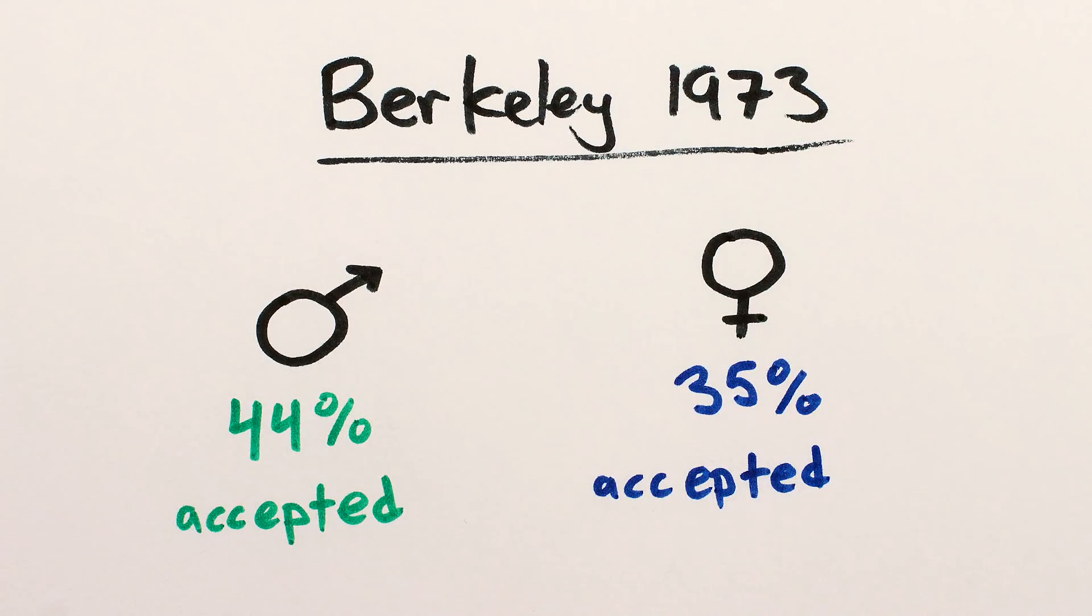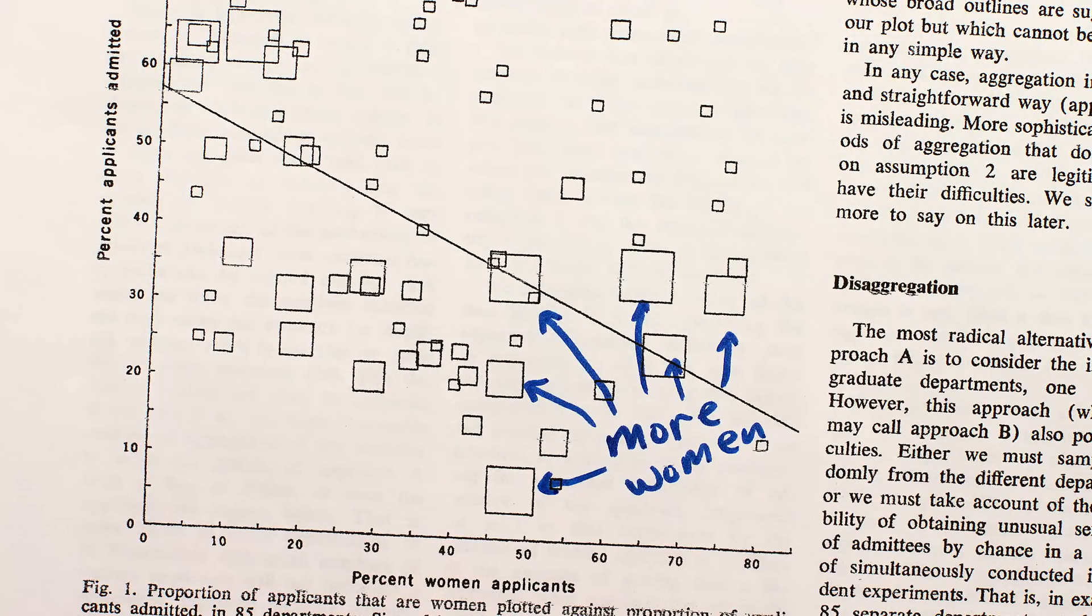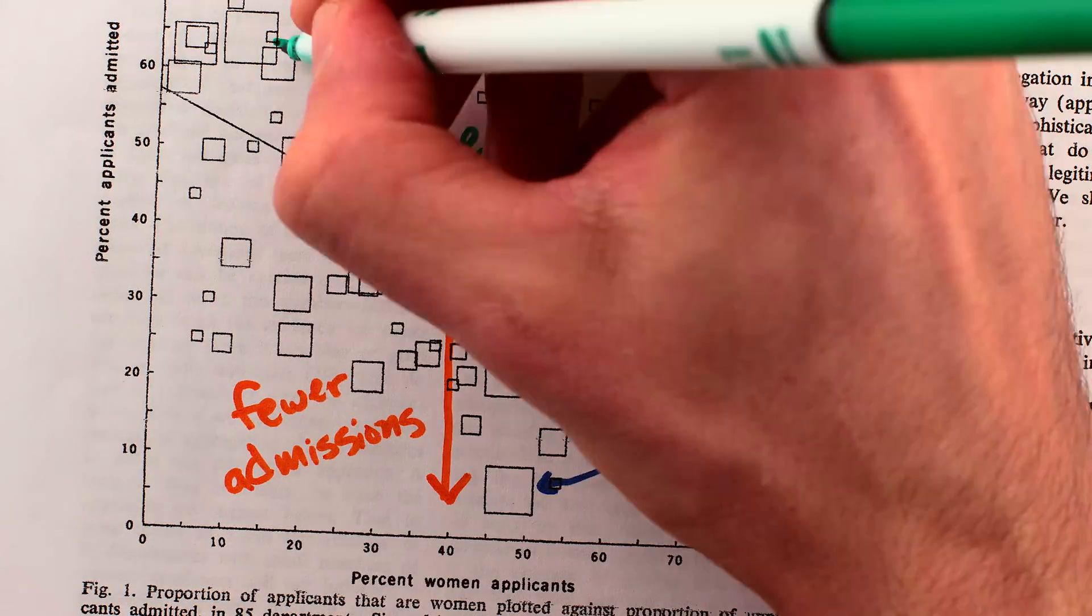Careful analysis was able to show that women tended to apply more to departments that had less funding and fewer places, like English, and men tended to apply more to less competitive departments, like engineering.